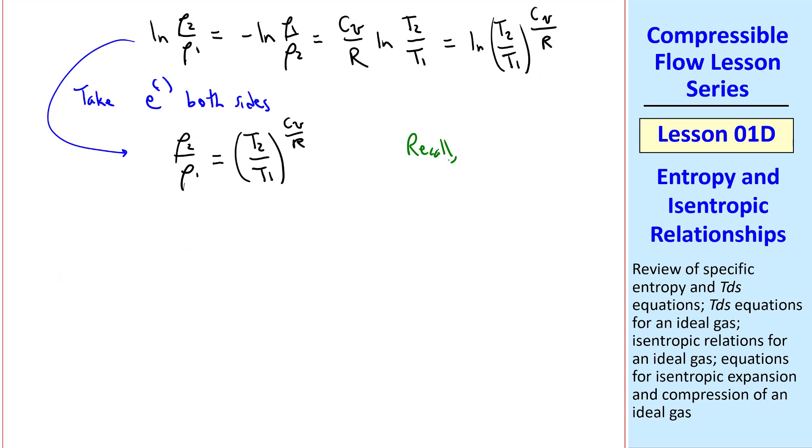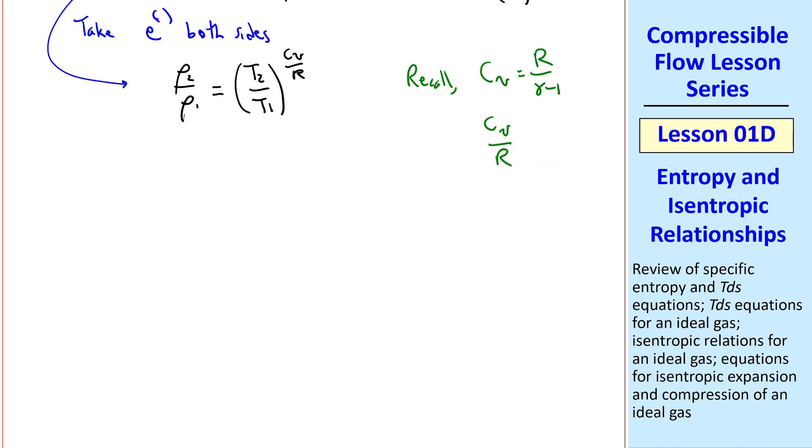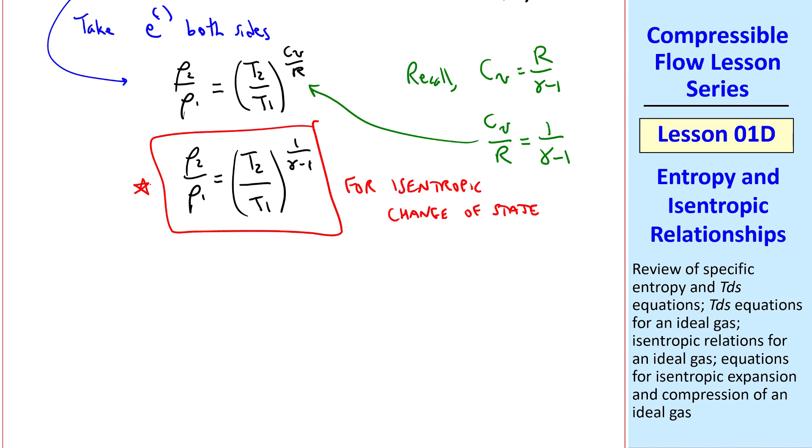But recall, for an ideal gas, cv is r over gamma minus 1, so cv over r is 1 over gamma minus 1. Plugging that in here, we get rho 2 over rho 1 equal t2 over t1 to the 1 over gamma minus 1. This is valid for an isentropic change of state, either in a process or in a portion of our flow. This is the equation we'll use in this course for isentropic flow of an ideal gas.